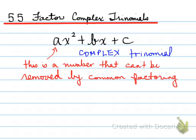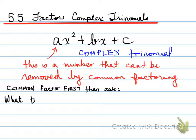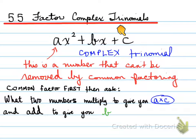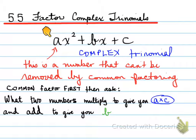What's important to note is the question you have to ask yourself. Before we do anything, we must always common factor first, and then ask yourself: what two numbers multiply to give you a times c and add to give you b? We have that product-sum rule from the previous section, but here our product is a combination of a times c.